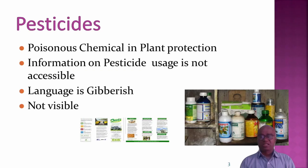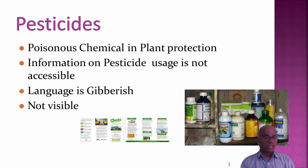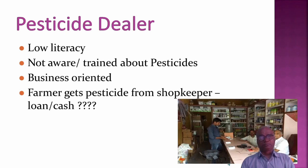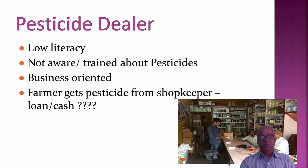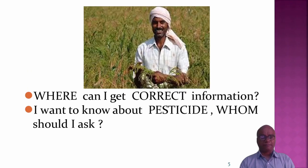Information on pesticide usage is not immediately accessible — the language on labels is gibberish and not even clearly visible. At the same time, the pesticide dealer has a low literacy rate and is not aware of or trained about pesticides. He is business-oriented, and the farmer gets pesticides from the shopkeeper either on loan or for cash.